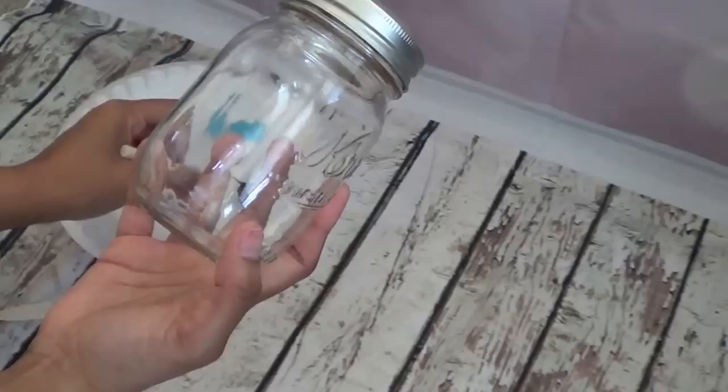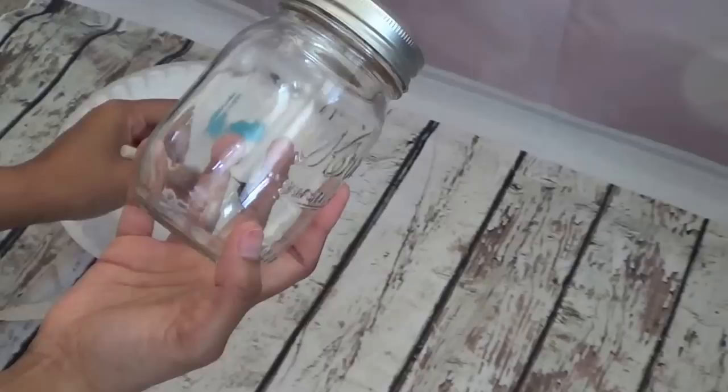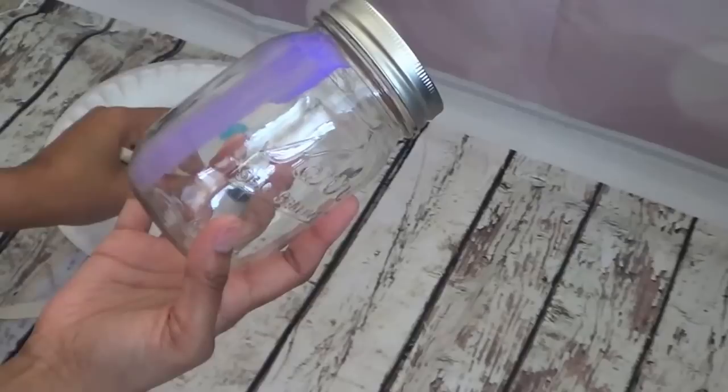To start off, we're going to paint the base of the mason jar with a color of your choice. I picked a purple color, a little darker than lavender but not too dark, and I'm going to paint the base all around.